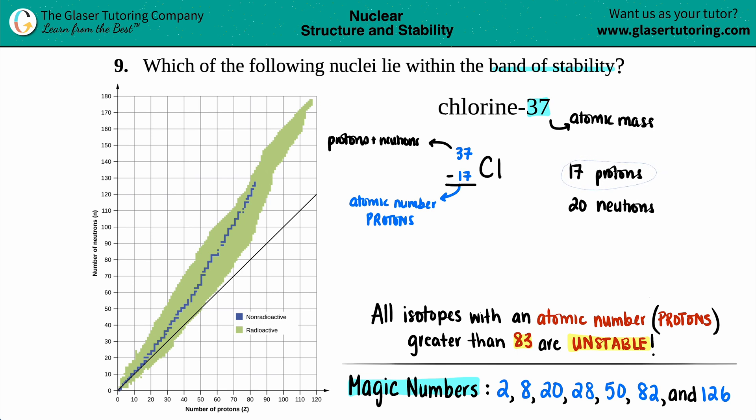Will an atom that has 17 protons and 20 neutrons be stable? The first thing you should do is check your magic numbers. There's only seven of them: 2, 8, 20, 28, 50, 82, and 126. If either a proton or a neutron have a magic number, it is automatically stable.